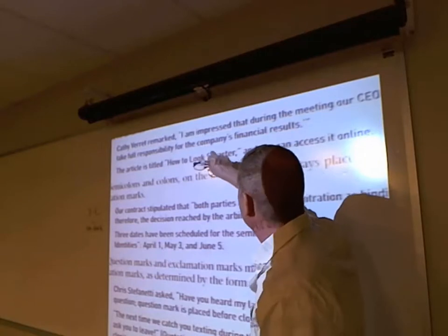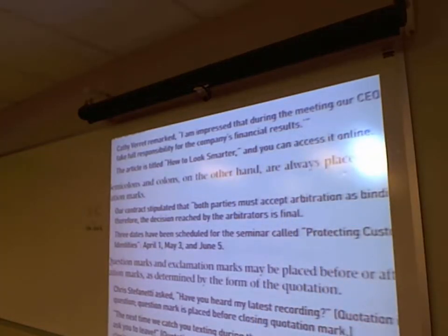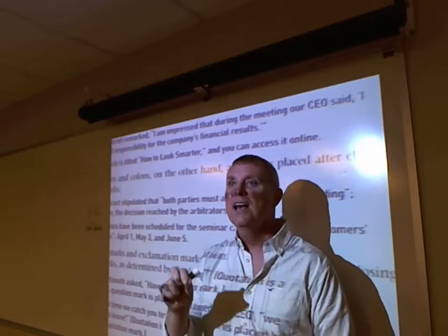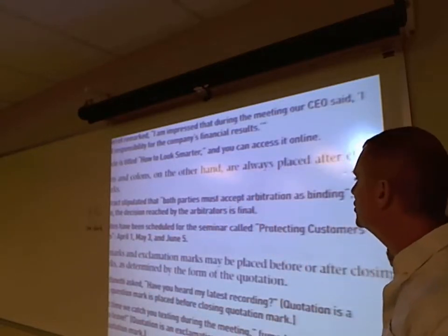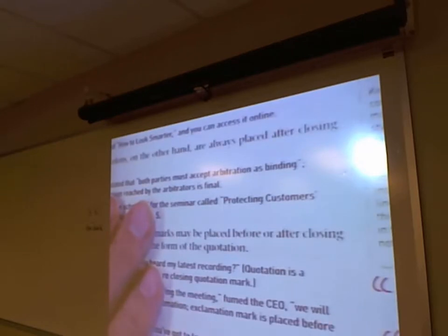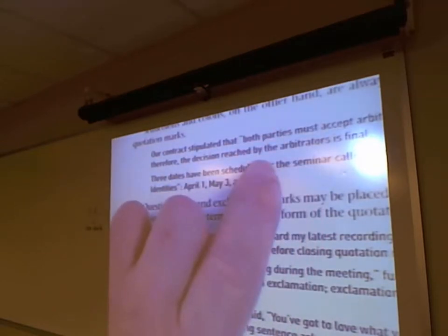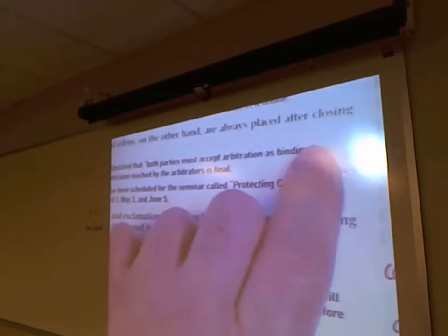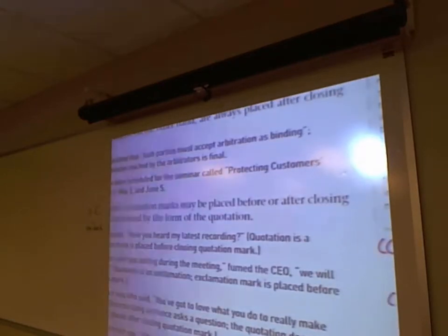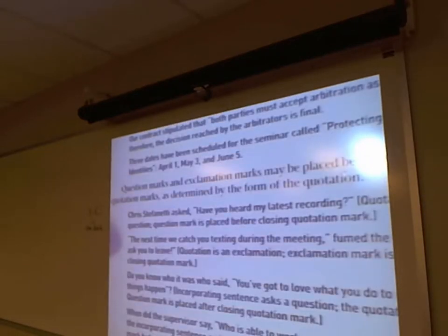'Our contract stipulated that both parties must accept arbitration as binding'; — the semicolon goes outside the quotation mark to separate the clauses. There's a conjunctive adverb with the semicolon before it, outside of the quotation marks, then 'therefore, the decision reached by the arbitrators is vital.' Three dates have been scheduled for the seminar called 'Protecting Customers' Identities': — notice the colon is outside the quotation mark. Commas and periods inside, semicolons and colons outside.